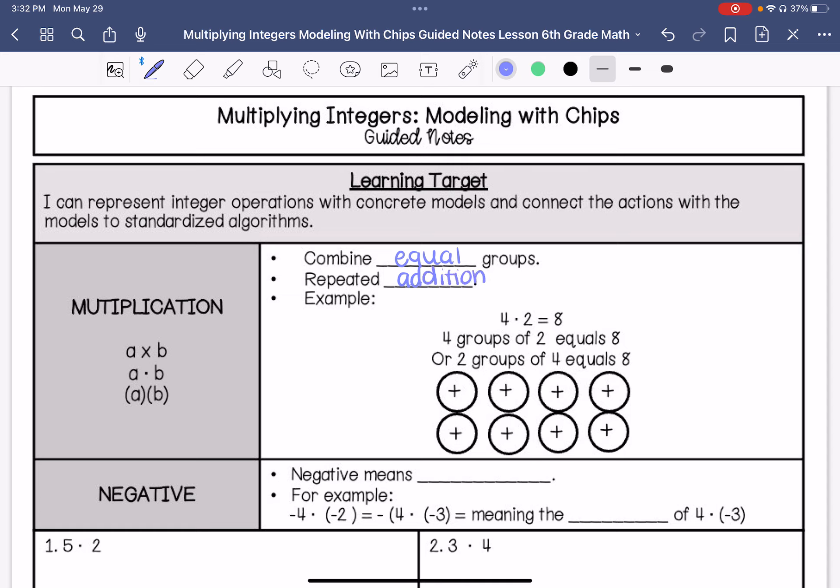So here we have an example of 4 times 2 equals 8. So we would make 4 groups of 2. So 1, 2, 3, 4 of 2. And this equals positive 8. It also can be said as 2 groups of 4. It doesn't really matter which way you do it.